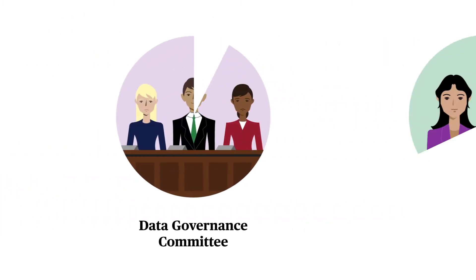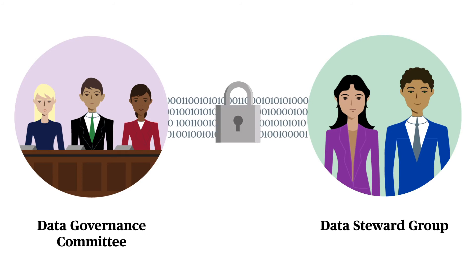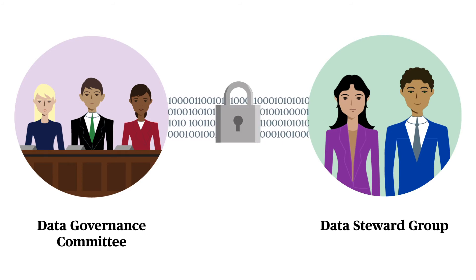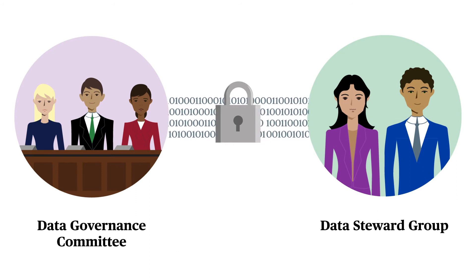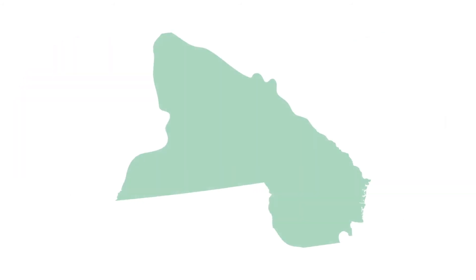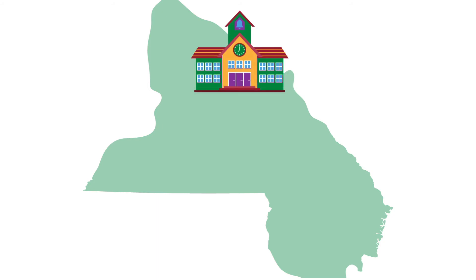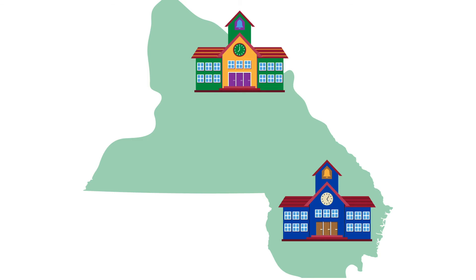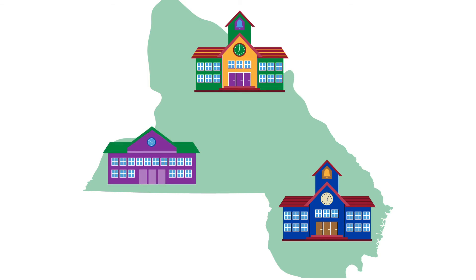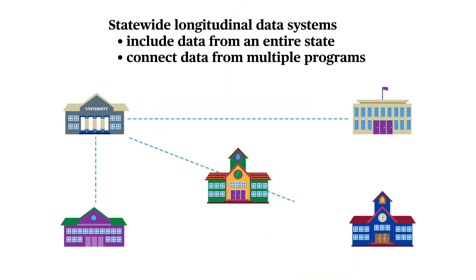Data from these sources are shared and linked securely to create longitudinal records that can be used without identifying individuals. The agencies that contribute data govern how those data are managed, protected, and used. Statewide Longitudinal Data Systems offer a number of benefits. They include data from an entire state, not just a single school district or program. Users can examine information for different geographic areas, and for the state as a whole. SLDSs connect data from multiple education and employment programs to show the relationships among the programs and the stakeholders whom they serve.